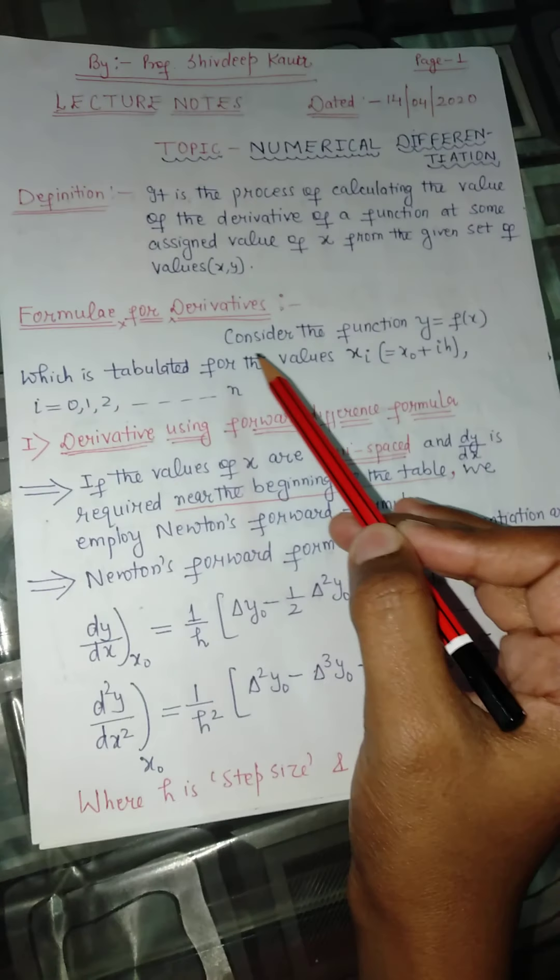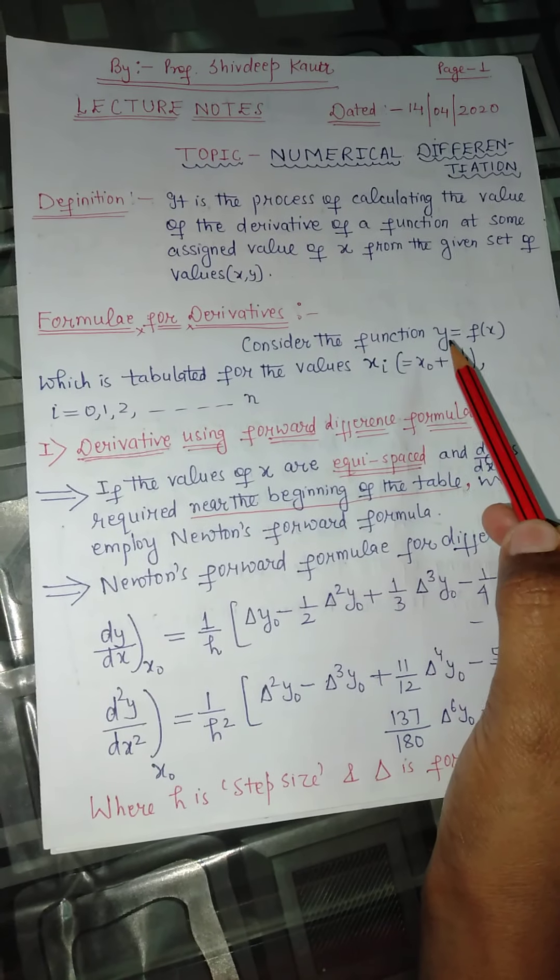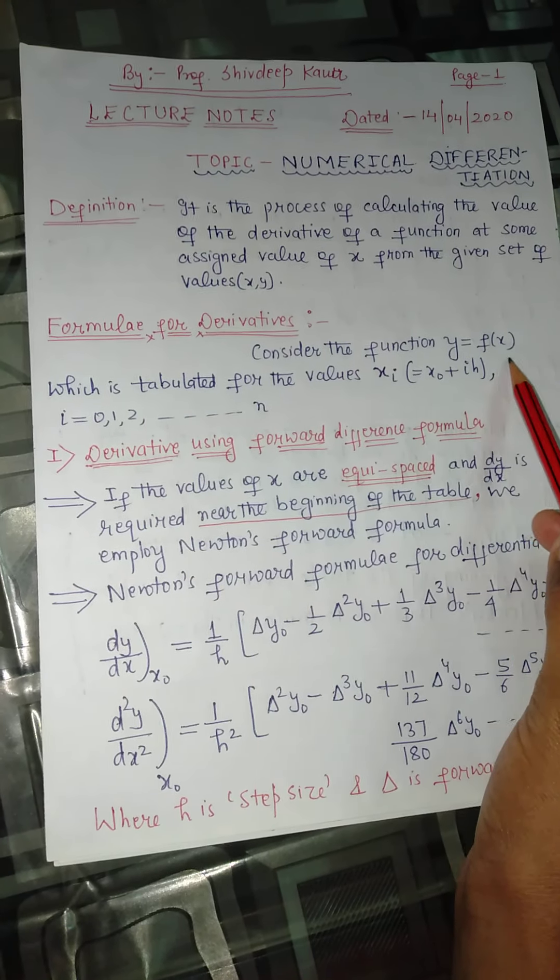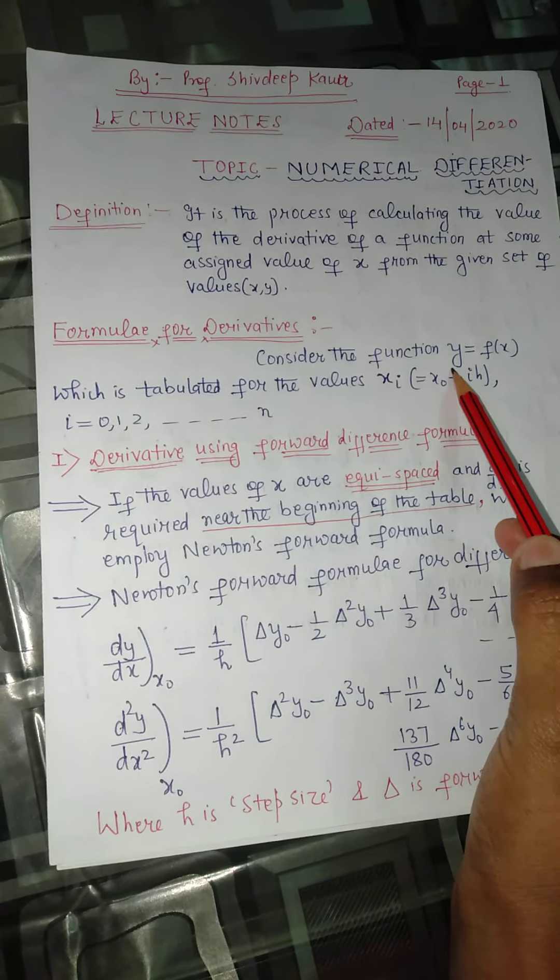To use a formula for derivatives, consider the function y = f(x), which is tabulated. Tabulated means we are given a table of values. Such a table may be given to us and the question will be like: find the derivative at the point x = 1.